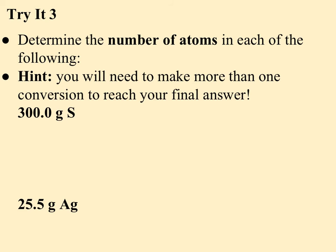And then for my last try it, I've asked you to determine the number of atoms in each of the following. Now, in reality, this isn't something we do often. But sometimes you need to do it. Especially when you're looking at water quality, you need to know the parts per million of chemicals in the water. My hint to you is you'll need to make more than one conversion to reach your final answer. We know that one mole equals 6.02 times 10 to the 23rd atoms or particles. And we know that one mole equals x grams. We don't know anything about grams to particles, except we can convert either one to moles. So that's what you're going to need to do.